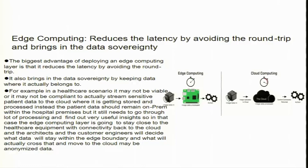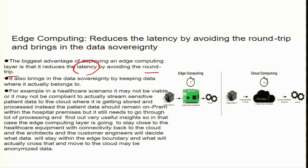Another aspect of making the cloud truly distributed by allowing edge computing is to reduce latency by avoiding the round trip and bringing in data sovereignty. The biggest advantage of deploying an edge computing layer is that it reduces latency by avoiding the round trip. This is a very big specification which allows many applications that were not ready or willing to be performed in the cloud — with edge computing it is now possible because of reduced latency.